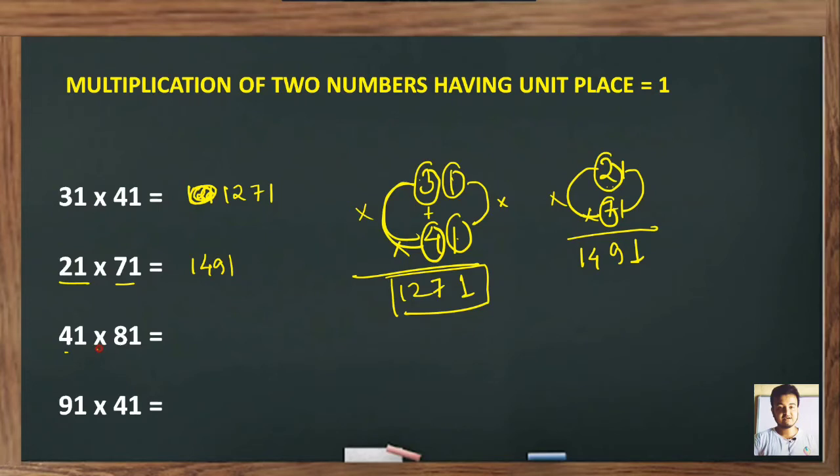Similarly, 41 into 81. First, 1 into 1 is 1. Then 4 plus 8 is 12. Now, since you have a two-digit number, write 2 here and 1 will be your carry. Then 4 into 8 is 32, and 1 is your carry, so 32 plus 1 is 33. This is your final answer: 3321.